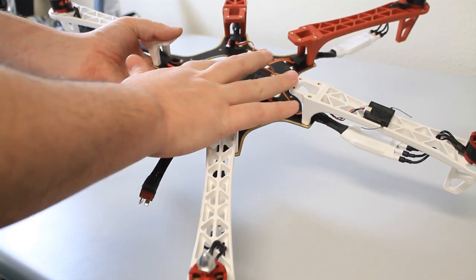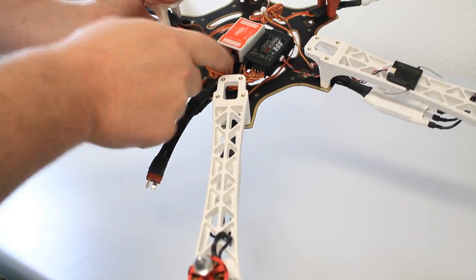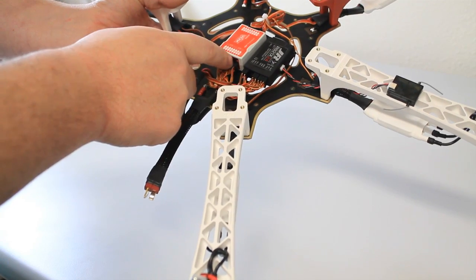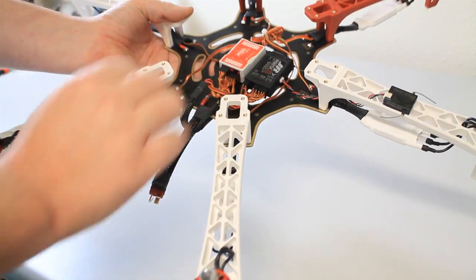because once we put the top plate on, it's going to be a lot harder to get these in. If you want to set up the auxiliary channels for the X1 and 2, make sure you do that now because it can be hard to get to it once we're done.